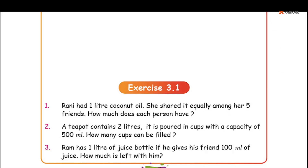Looking at what Rani has: the volume of coconut oil is 1 liter. Rani is sharing it equally among her friends — she is sharing it among 5 friends. So we need to find how much coconut oil each person will get. Let's see how to calculate that.